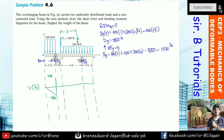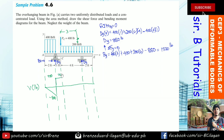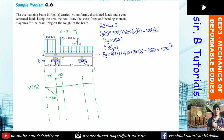From B to C, there is no distributed load acting on the beam, so the shear remains constant at 720 pounds — a horizontal line. At point C, there is a concentrated load of 400 pounds acting downward. So: 720 minus 400 = 320 pounds. The shear just to the right of C is 320 pounds.